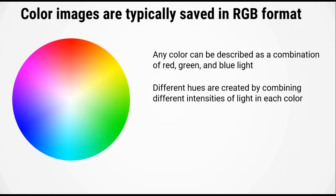Let's take a look at color images and how the data is stored on the computer. Color images are typically saved in RGB format, and RGB stands for red, green, and blue. In the RGB format, any color can be described as a combination of red, green, and blue light, as indicated by this color wheel here.